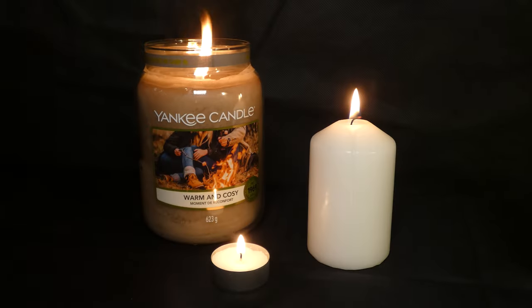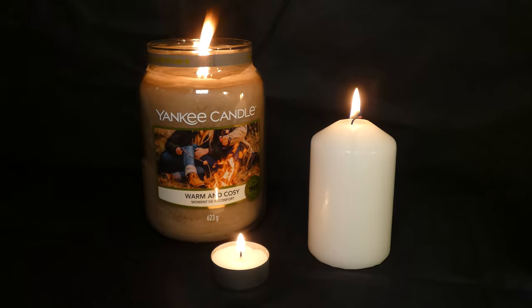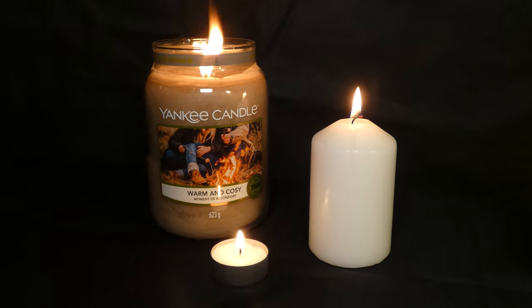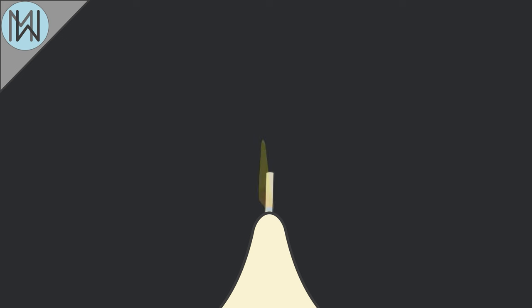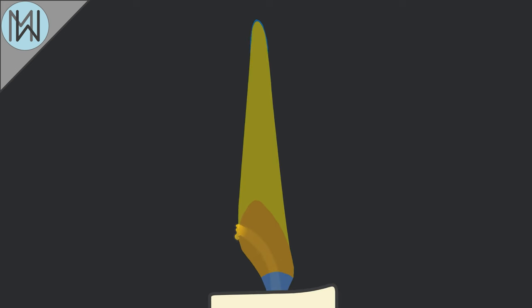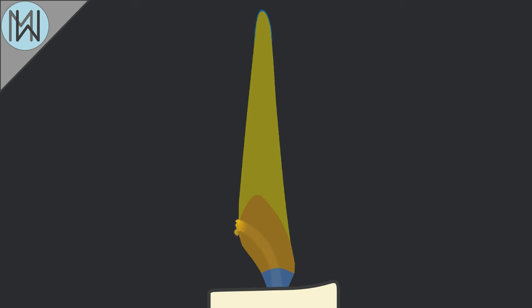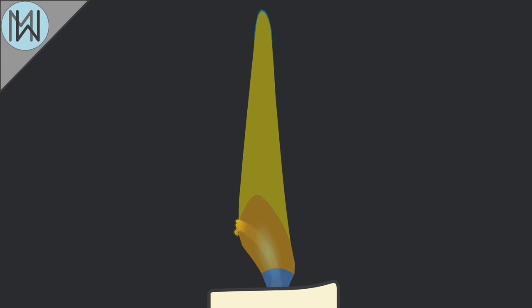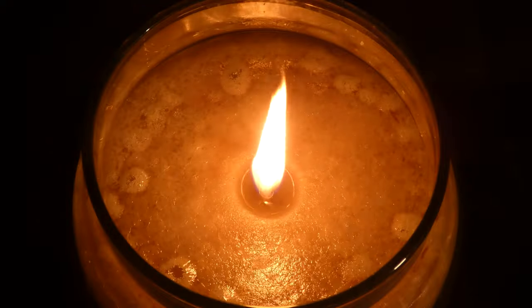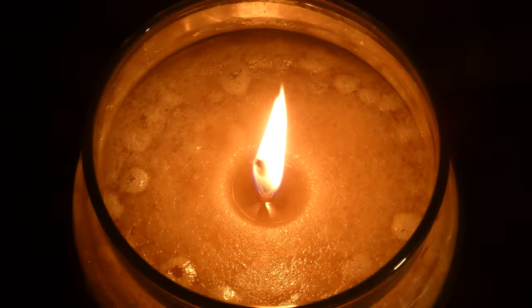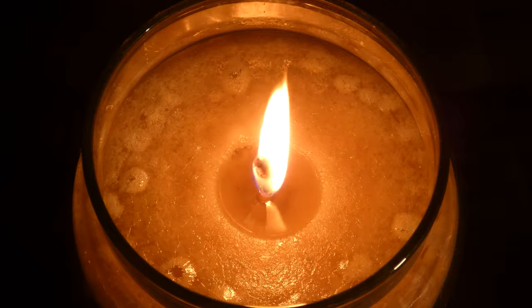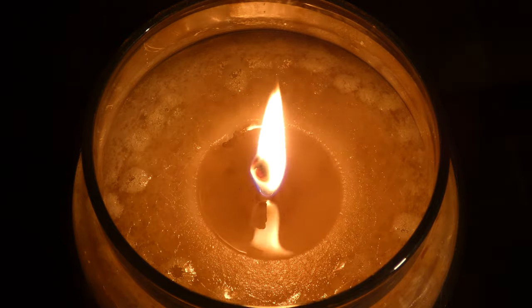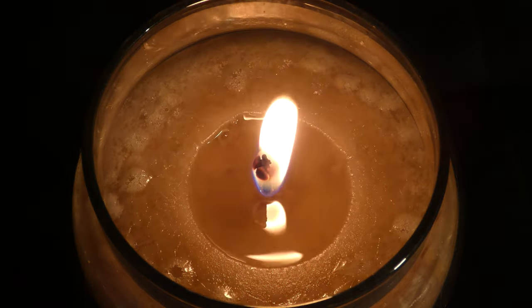The basics of a candle are fairly, well, basic. You light the candle, the wax around the wick melts, flows up the wick, vaporises and burns. This combustion generates heat, which melts more wax and the self-sustaining cycle continues.